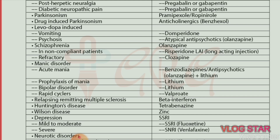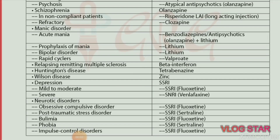Depression — drug of choice is SSRI. Mild to moderate depression — drug of choice is SSRI. For severe depression — drug of choice is SNRI, specifically venlafaxine. Neurotic disorders — obsessive-compulsive disorder (OCD) — drug of choice is SSRI, specifically fluoxetine.